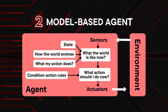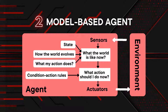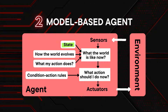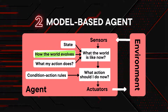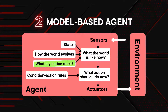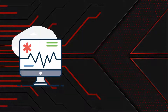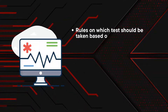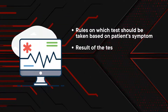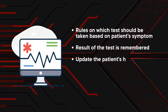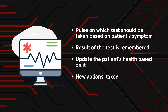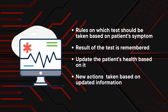A model-based agent remembers parts of the world it can't see now. It depends on percept history and thereby reflects at least some of the unobserved aspects of the current state. It requires two sorts of knowledge: info about how the world evolves independently, and how the agent's own actions affect the world. For example, in a medical diagnosis system, there are rules that dictate which test should be taken based on a patient's symptoms. The result of the test is remembered and the system updates the patient's health based on it, with new actions taken based on updated information.